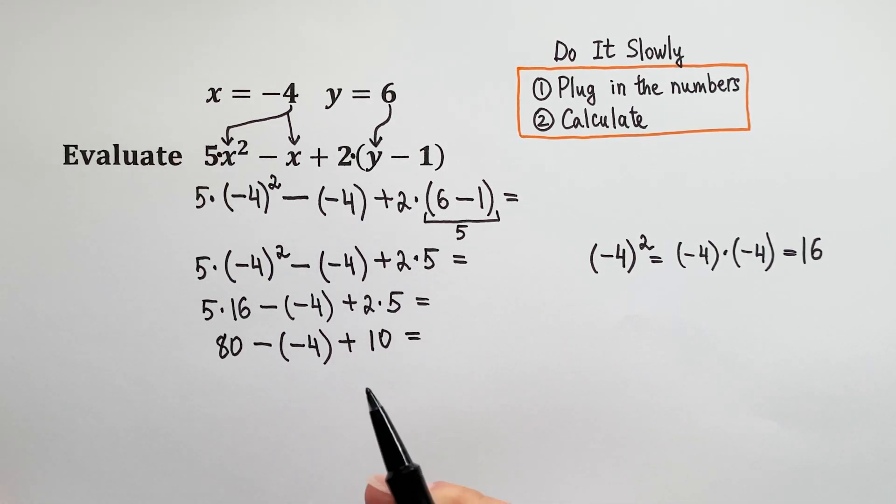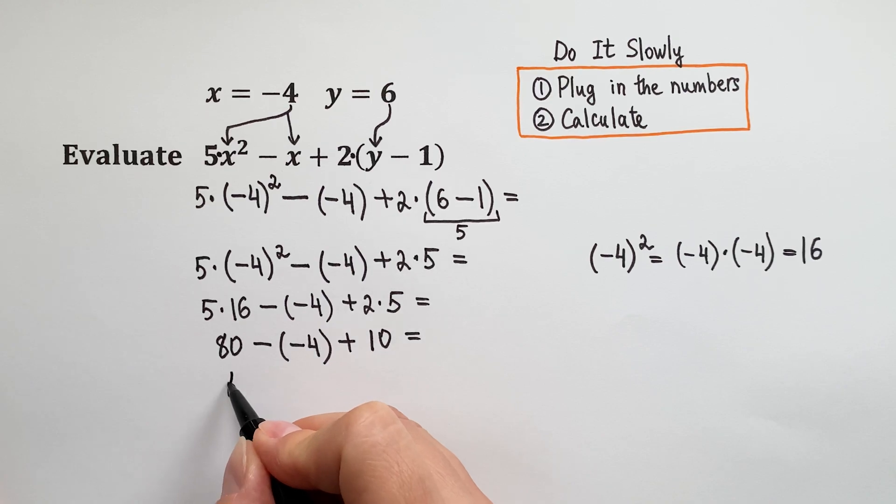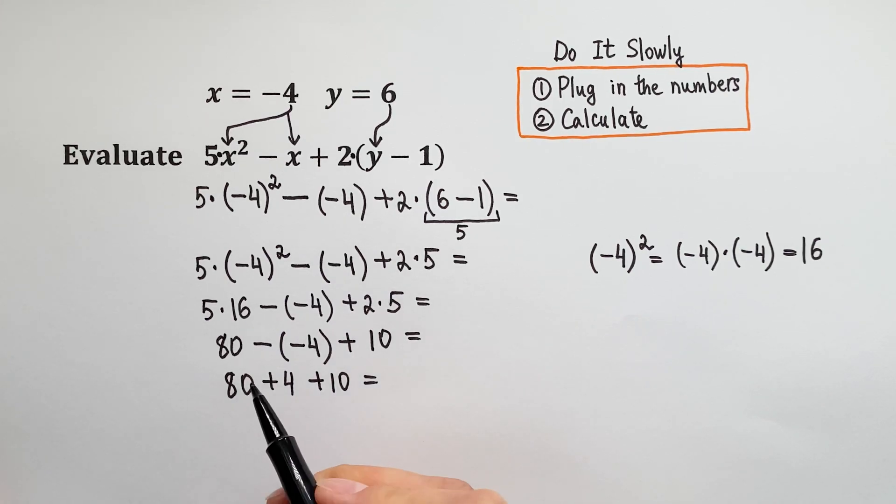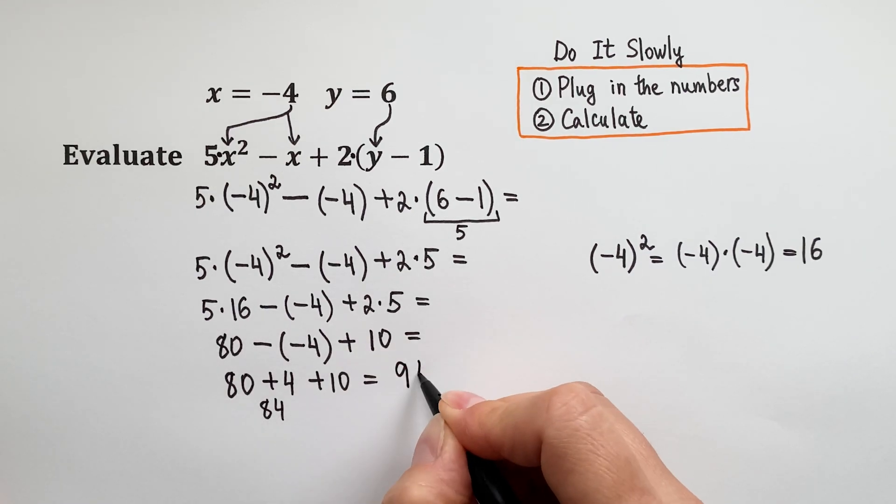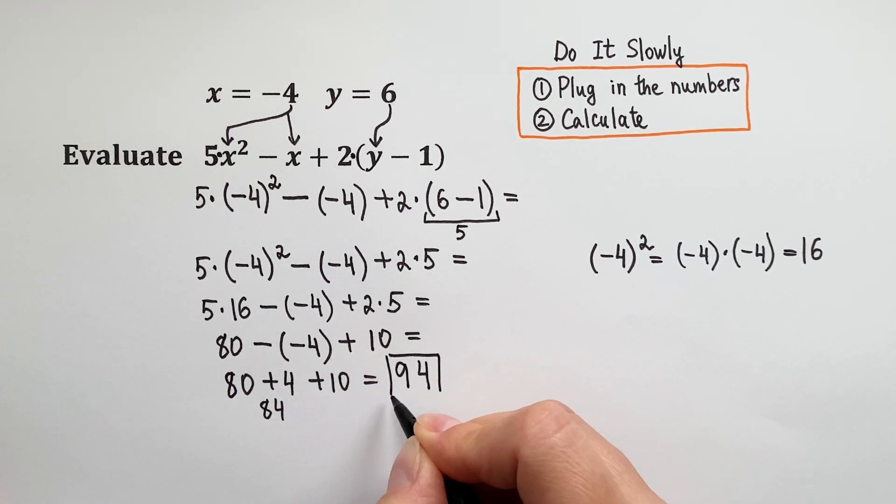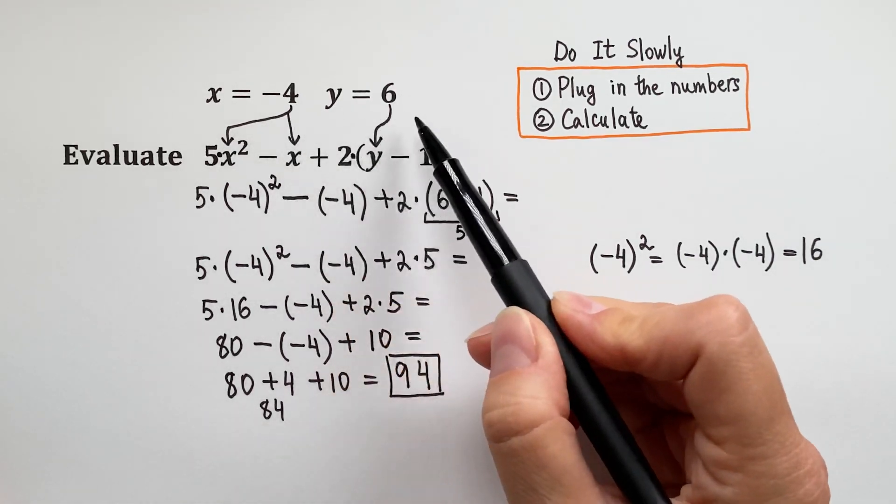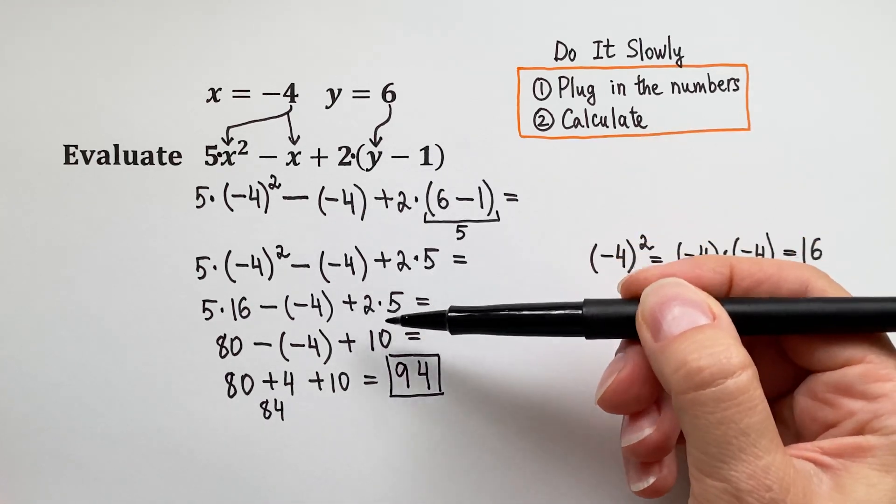Almost done! Look here! We are subtracting a negative number. Minus a negative 4 becomes a plus 4, because minus a negative becomes a positive. So we have 80 plus 4 and then plus 10. We can add these numbers together. 80 plus 4 is 84, plus 10 is 94.